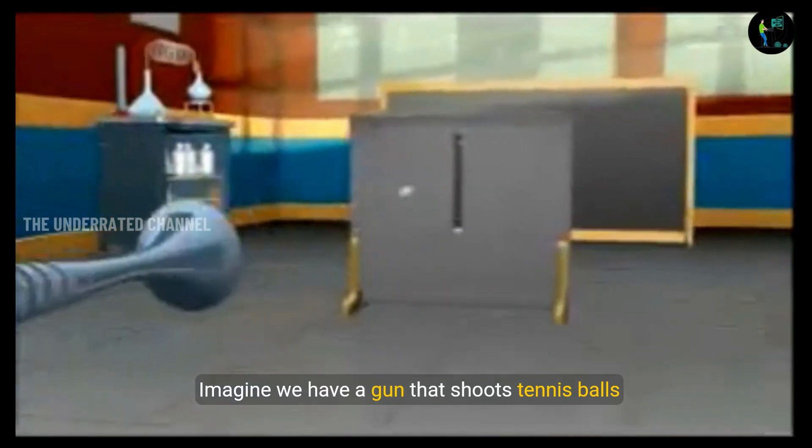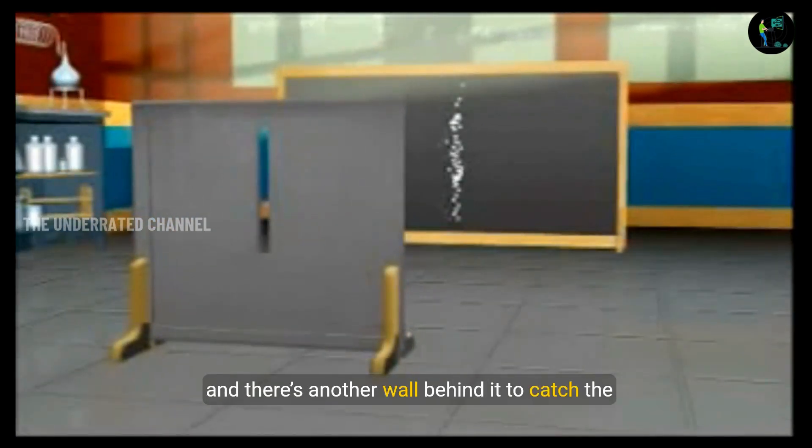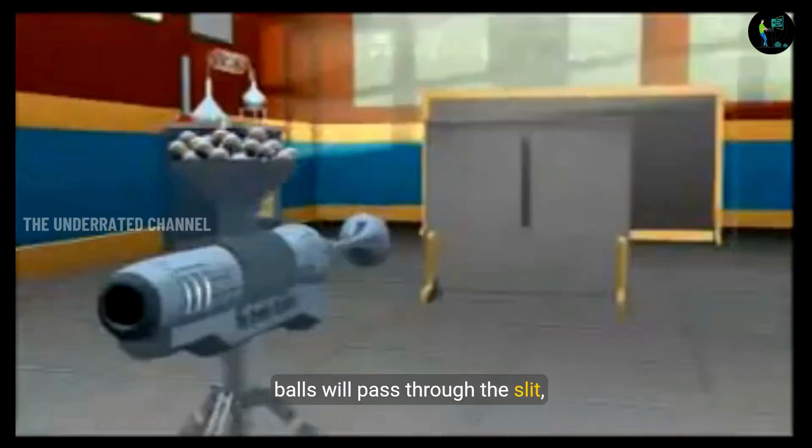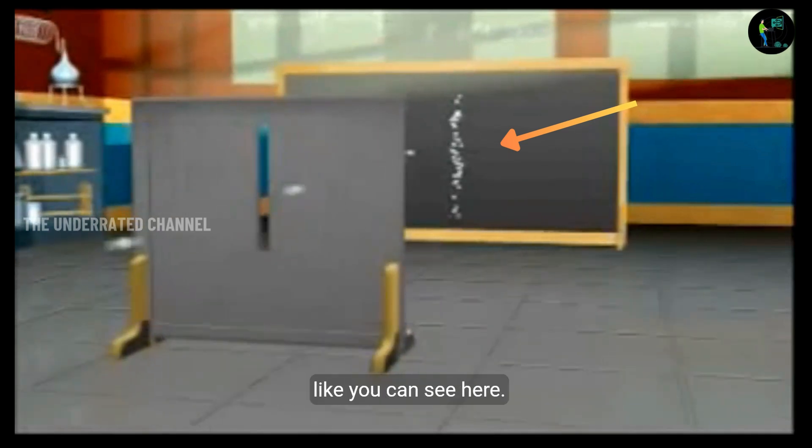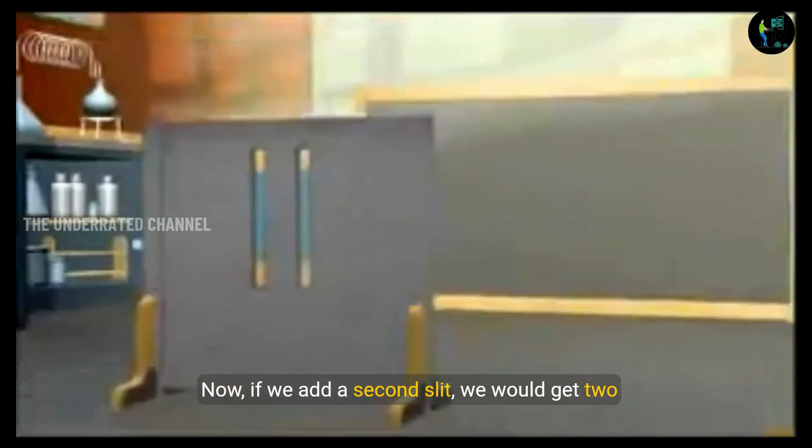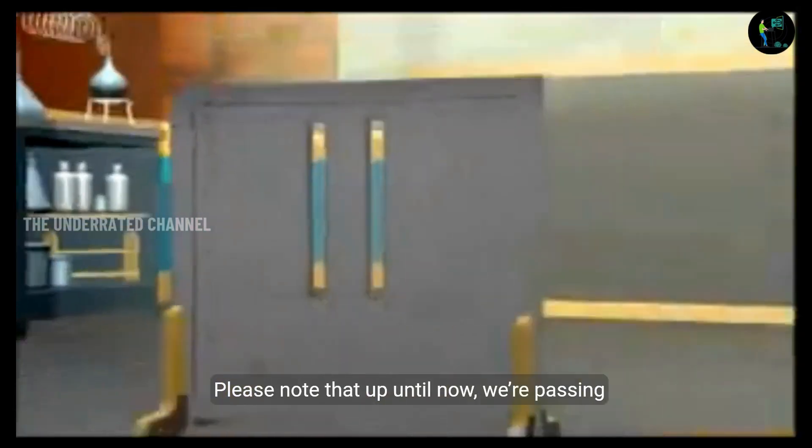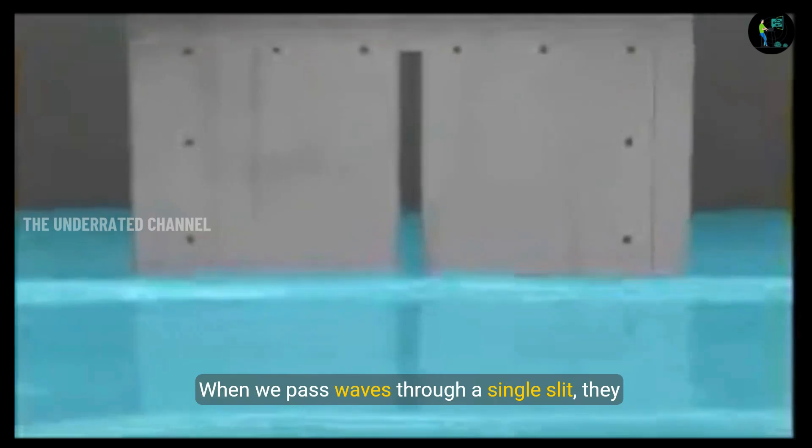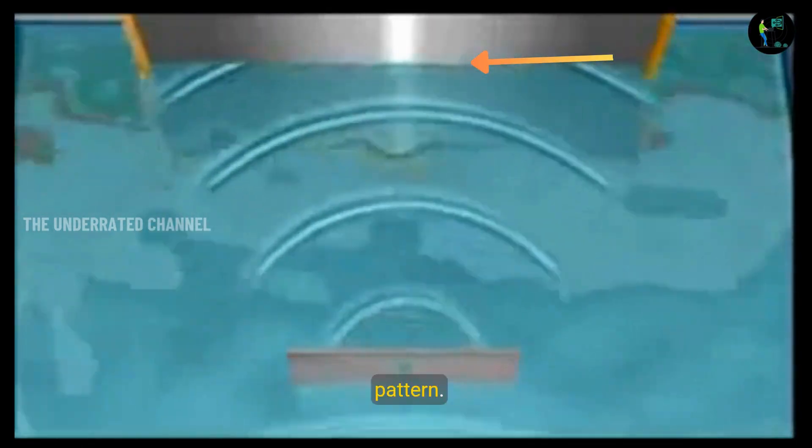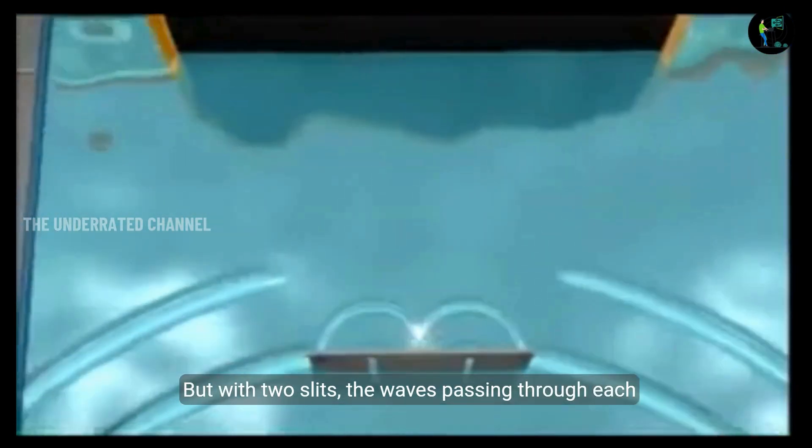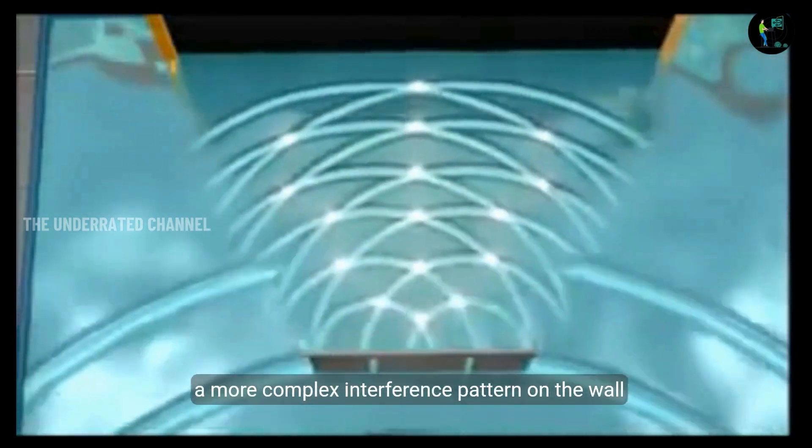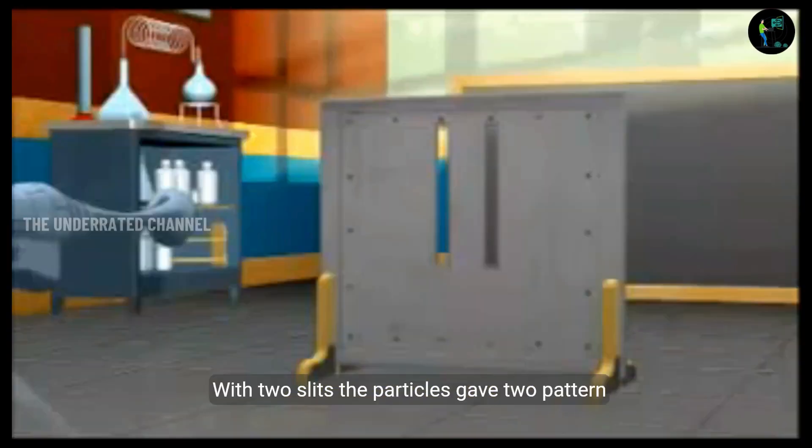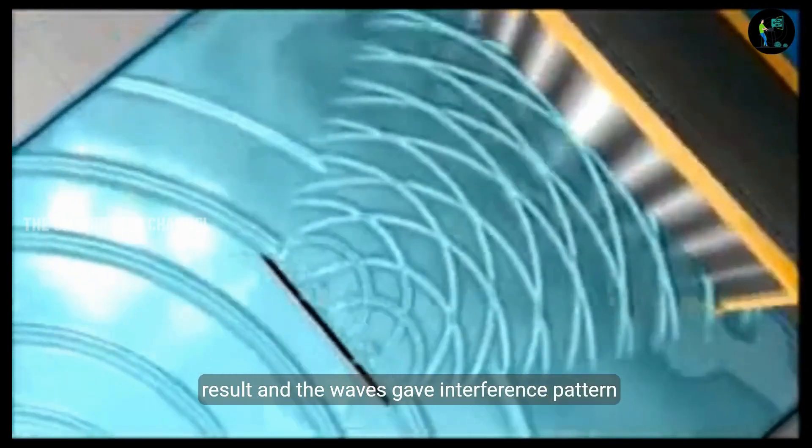Imagine we have a gun that shoots tennis balls towards a wall with a single slit in the middle, and there is another wall behind it to catch the balls. If we shoot the balls, then most of the balls will hit the first wall and stop there, whereas few balls will pass through the slit and creates a single line pattern on the wall behind, like you can see here. Now, if we add a second slit, we would get two patterns corresponding to two slits, right? Please note that up until now, we are passing particles in this case like tennis balls. But what if we try the same experiment with waves? When we pass waves through a single slit, they travel through it and hit the wall in a single pattern. But with two slits, the waves passing through each slit meet and interfere with each other, creating a more complex interference pattern on the wall behind like this. Just a small recap. With two slits, the electrons gave the two-pattern result and the wave gave interference pattern result.